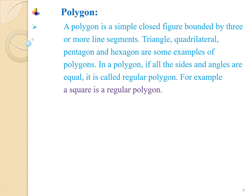For example, a square is a regular polygon. Students, remember that a triangle is a polygon with the least number of sides. Note that if a figure has less than three sides, it is not called a polygon. Also, if a figure is open or has any curved line, it is also not called a polygon. So, now let us solve exercise 4.2.